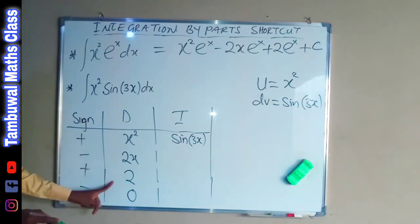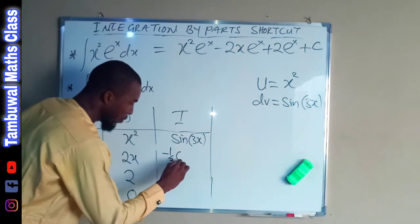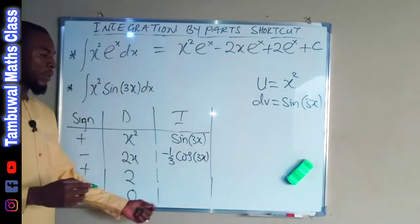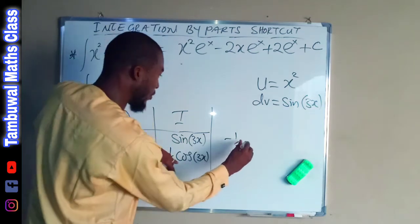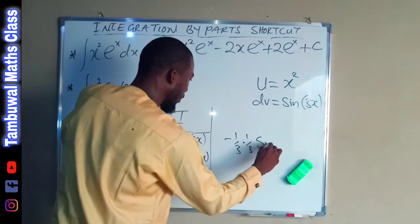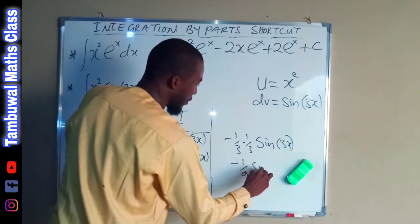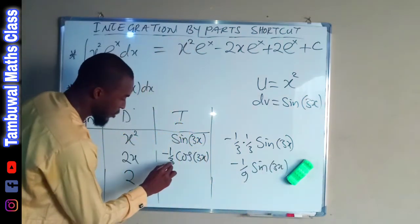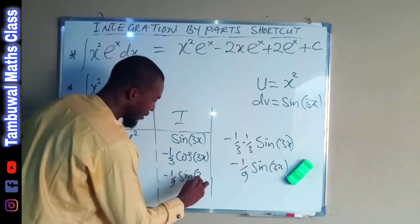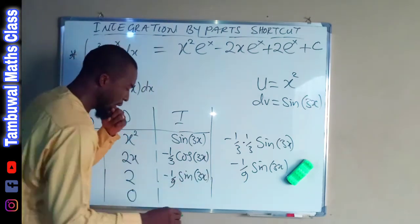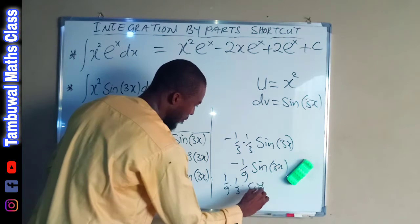The differentiation column remains the same. For the integration column: if you integrate sine 3x you get negative 1 over 3 times cos 3x. If you further integrate that — remembering the constant negative 1 over 3 — you integrate cos 3x to get 1 over 3 sine 3x, giving negative 1 over 9 sine 3x. Further integrating: the negatives cancel and you get 1 over 9 times 1 over 3 times cos 3x.